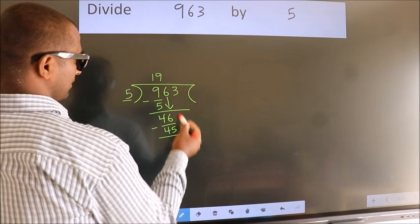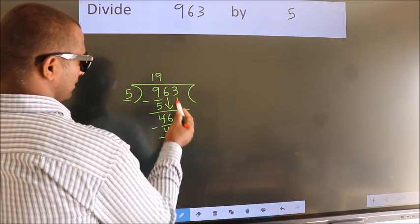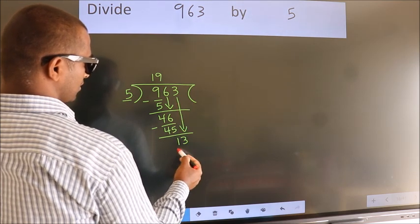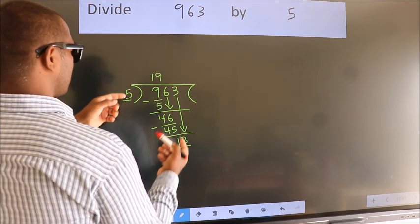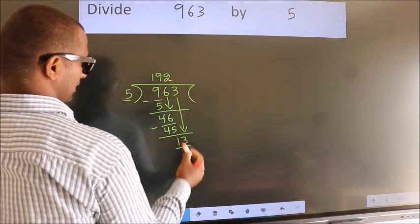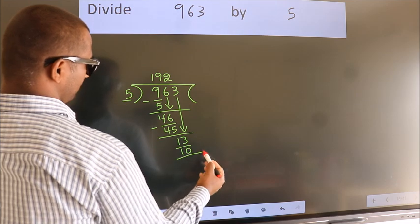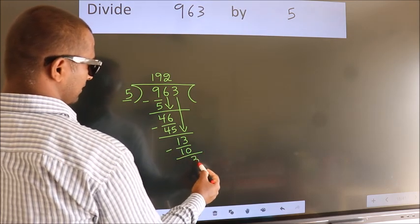After this, bring down the beside number. So 3 down. So 13. A number close to 13 in 5 table is 5 2s 10. Now we subtract. We get 3.